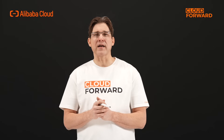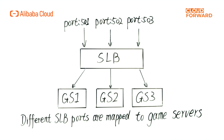Once the game rooms have their own independent public network access addresses, the remaining question is how to provide this address to the player's client. Generally, session-based games have a matching service role, and the matching service commonly perceives the network address of room servers in two ways: active retrieval, and room server self-registration and reporting.